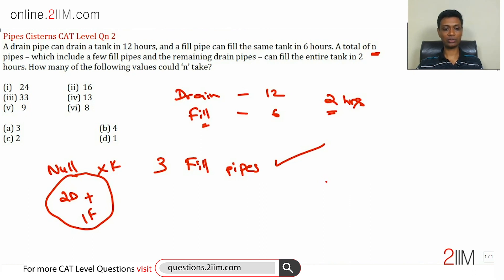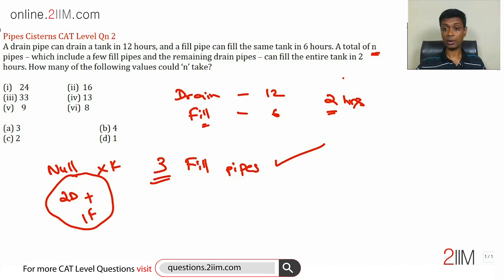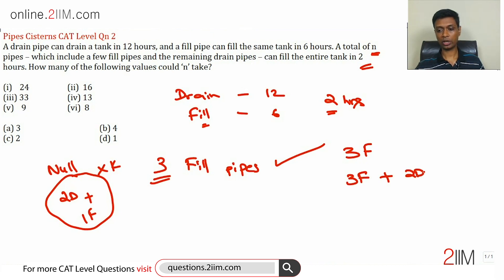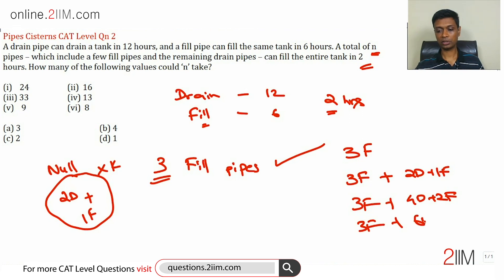So I can create a system of three pipes — two drain and one fill — and keep replicating this to achieve nothing. Finally, if I add three fill pipes to that, I'll be able to fill the tank in two hours. So I can have three fill pipes, or three fill pipes plus two drains and one fill, or three fill pipes plus four drains and two fills, or three fill pipes plus six drains and three fills — all of these achieve the objective.